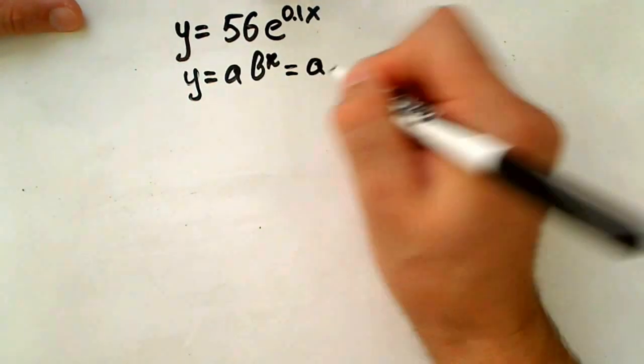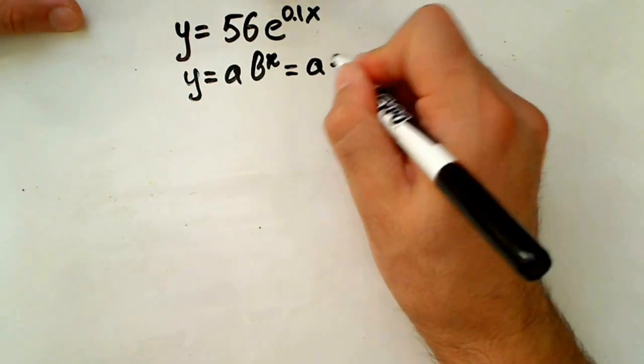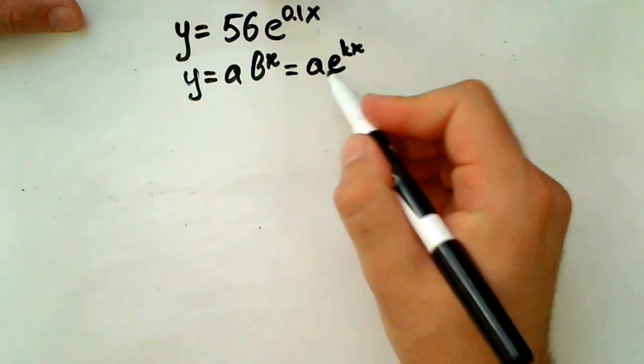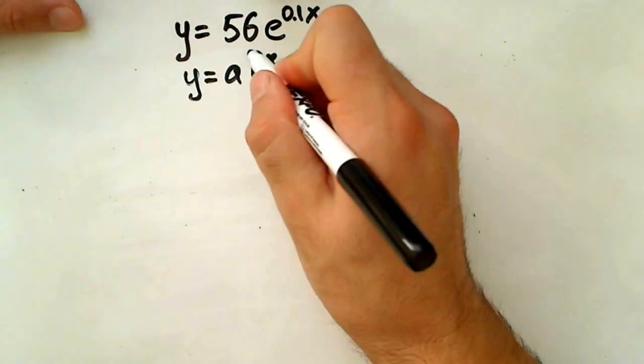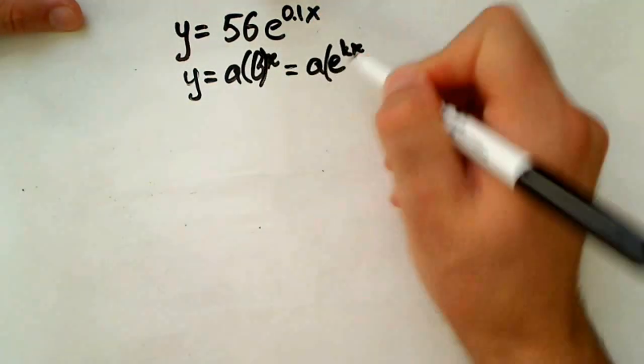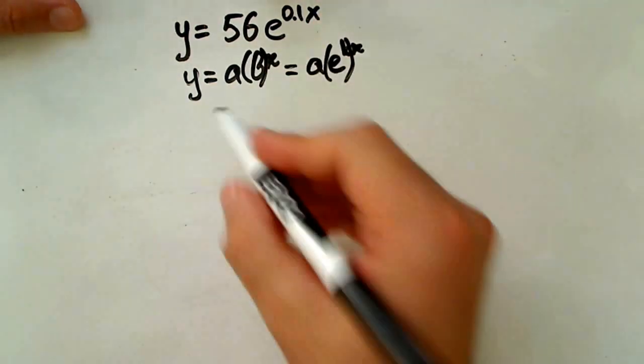First of all we have to remember that it's equivalent to a e to the k x which is continuous growth rate. And as we can see from the formula, b equals e to the k.